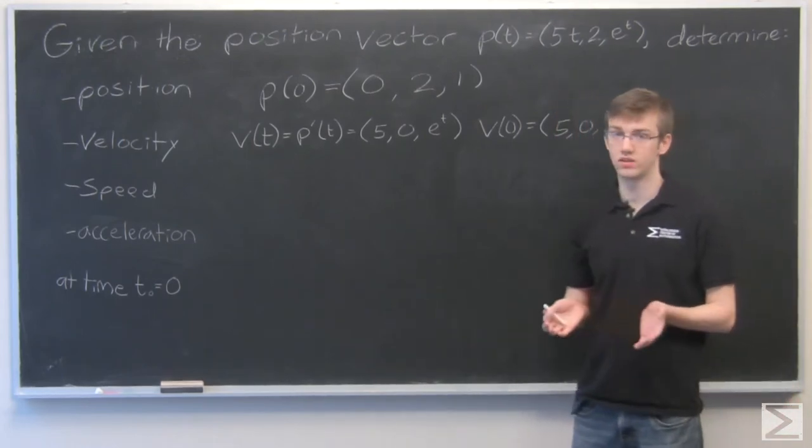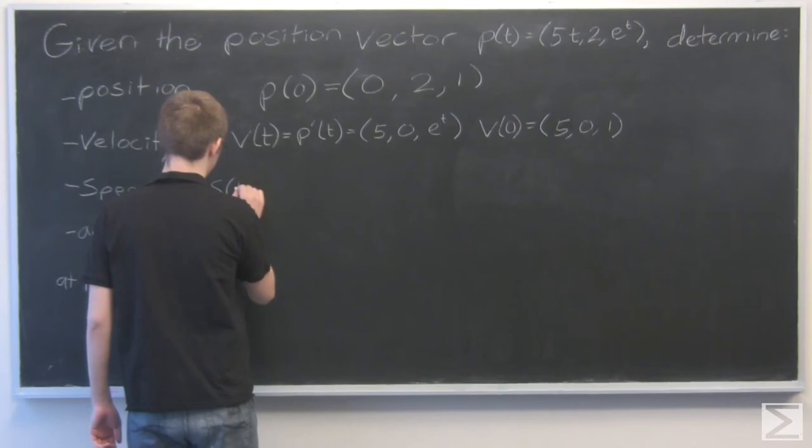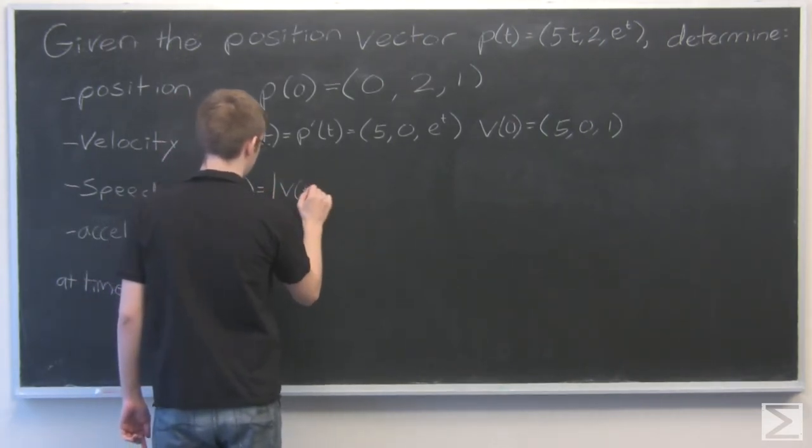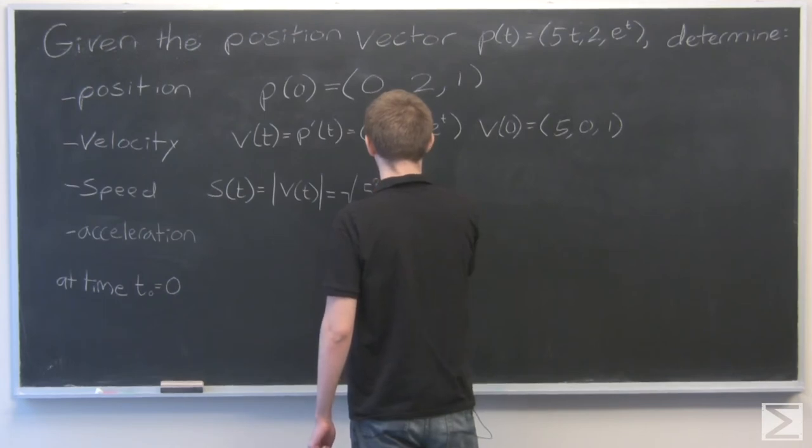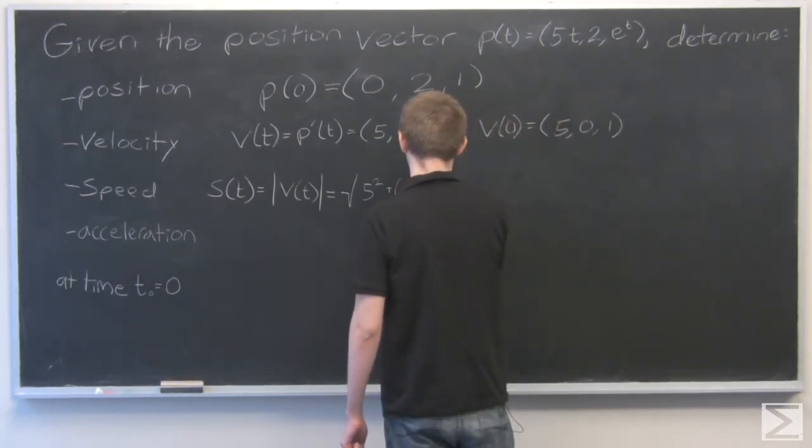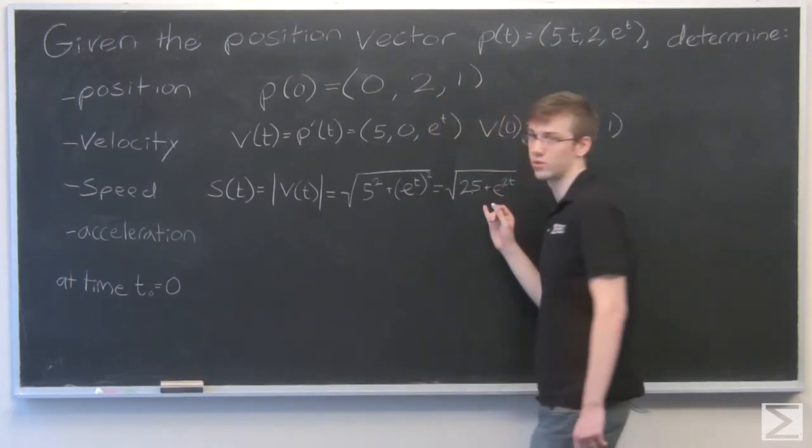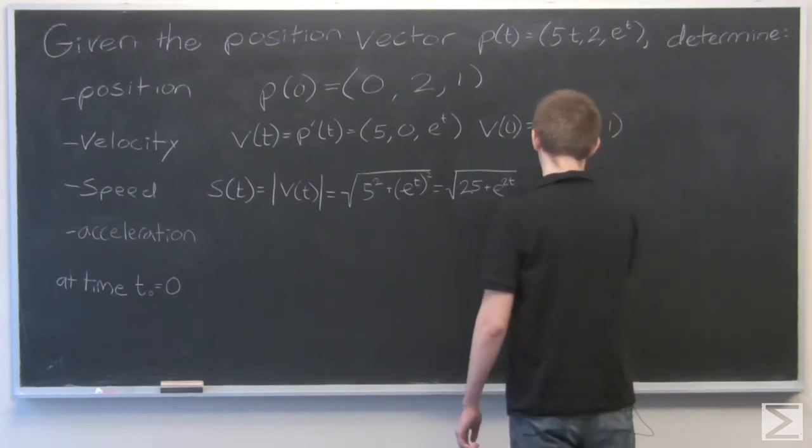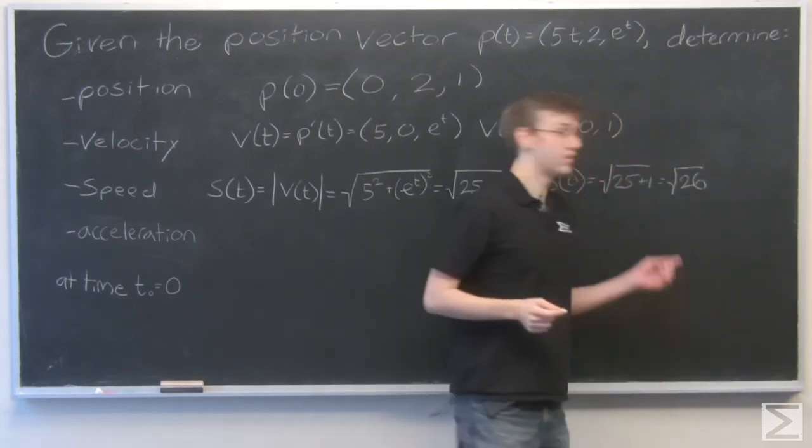Now for speed, speed is just the magnitude of velocity. So how we do that is like this. It's the magnitude of velocity, so square root of 5 squared plus 0 squared plus e to the t squared. So that's 25 plus e to the 2t. Now we'll plug in for 0. And we get the square root of 26.